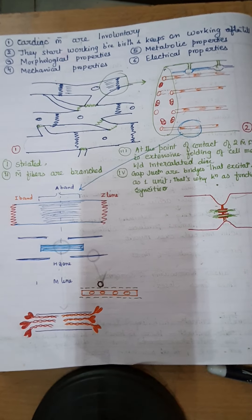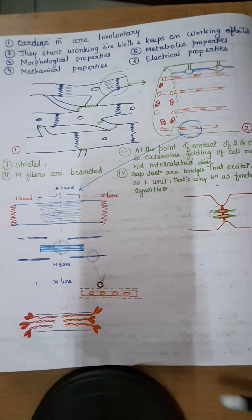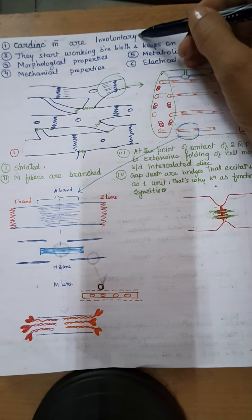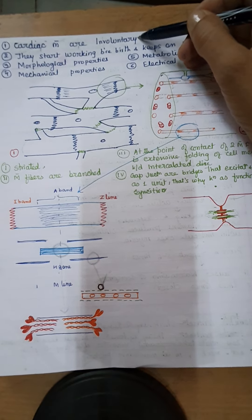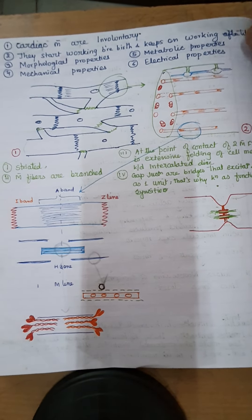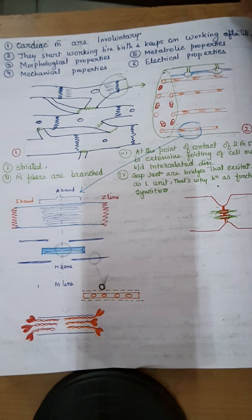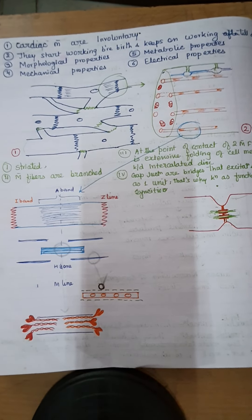Today's lecture is about the properties of the cardiac muscle. Cardiac muscle is involuntary in nature, meaning it doesn't follow our will. It contracts by itself. It starts working before our birth in the womb of the mother and keeps on working till our death.